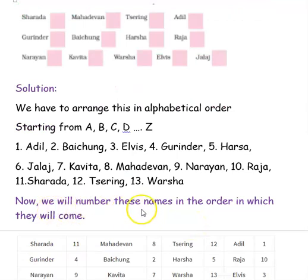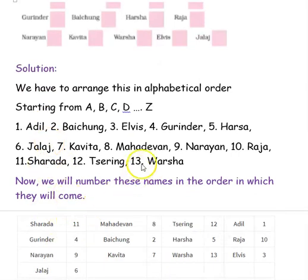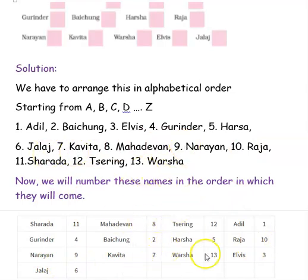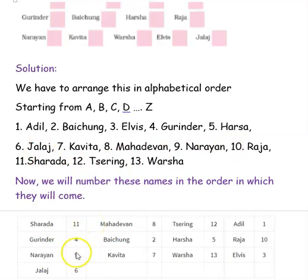Now we will number the original names in the order in which they will come. Sharada is 11. Mahadevan is 8. Teshring is 12. Adil is 1. Guringer is 4. Baichu is 2. Harsha is 5. Raja is 10. Narayan is 9. Kavita is 7. Varsha is 13. Elvis is 3. Jalaj is 6. We have now given numbers to all the names in order.